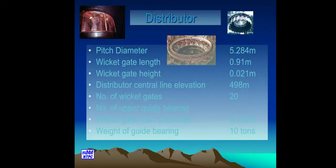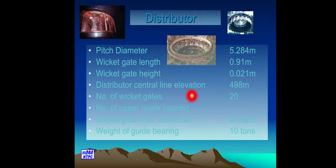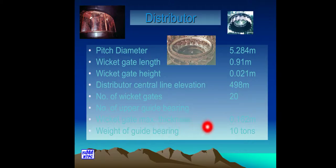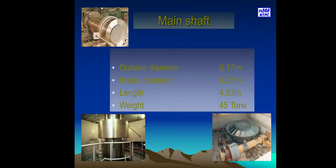Distributor pitch diameter 5.284 m; wicket gate length 0.91 m; wicket gate height 0.021 m; distributor centre line elevation 498 m; number of wicket gates 20. Main shaft outside diameter 0.17 m; inside diameter 0.25 m; length 4.53 m; weight 45 t.